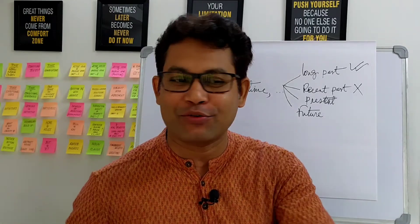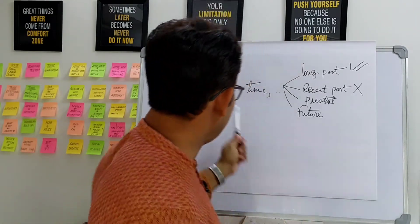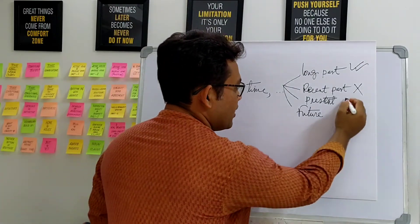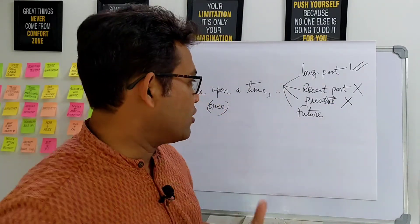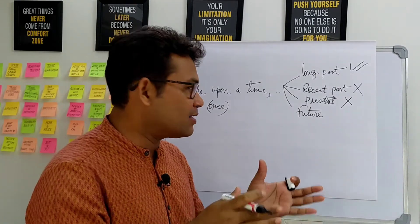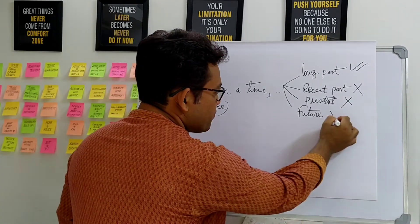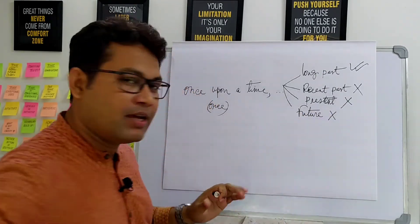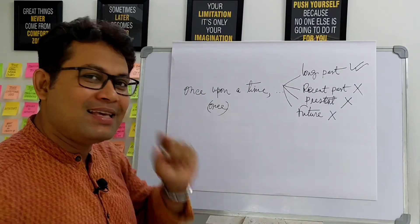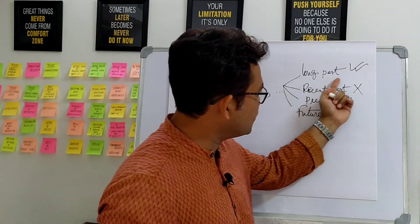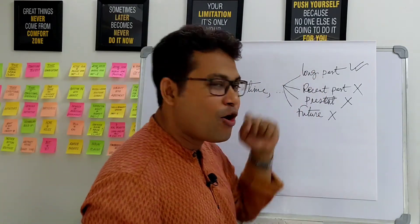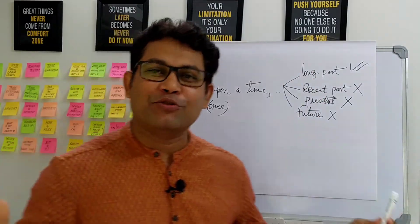Again, the phrase cannot be used for a situation happening at present. If we try to narrate a story in the present tense, 'once upon a time' is not at all suitable. And again, we cannot narrate a story that happened in the past using the future tense. So as you can see, 'once upon a time' is best suited for stories happening in the long past.